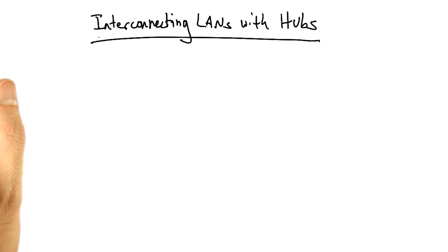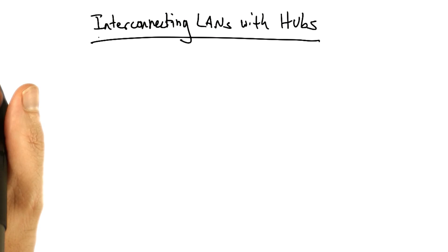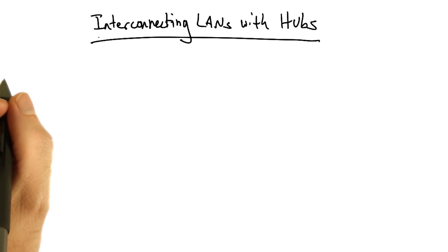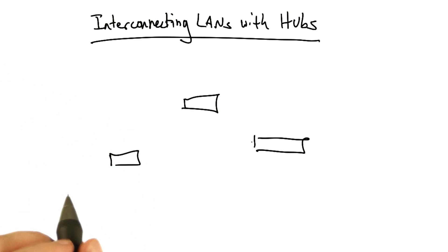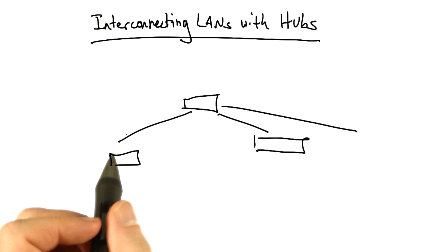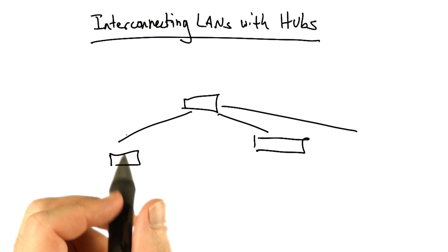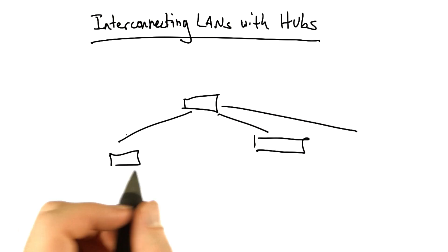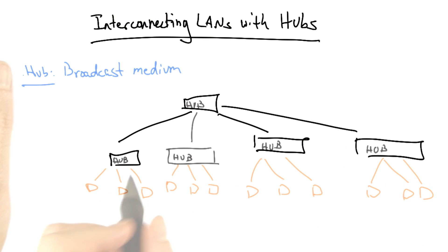The simplest way that a LAN can be connected is with something called a hub. Hubs are the simplest form of interconnection, and in some sense they don't even exist in networks anymore today, because you can build a switch for essentially the same price. But for the sake of example, let's just take a look at how a LAN would be connected with a hub.